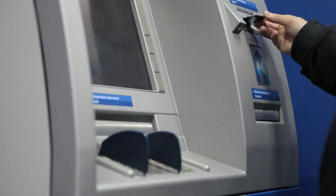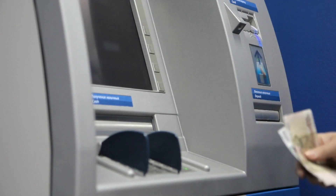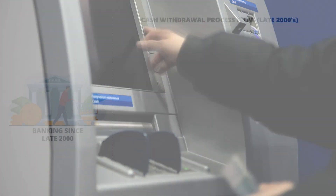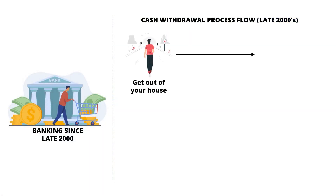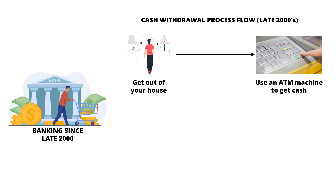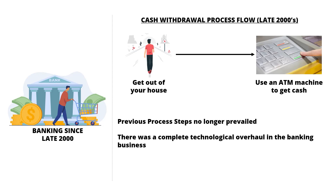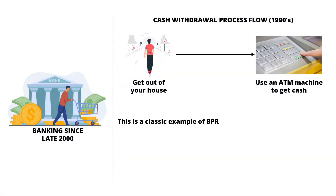Then some consultants came together and used BPR for this problem. They decided to use technology in the banking business, and you observed the emergence of ATM machines. The launch of ATM machines radically redesigned the cash withdrawal process — now an individual just needed to go to the closest ATM machine, swipe a card, and get the money. The previous process steps no longer prevailed; there was a complete technological overhaul in banking. This helped change the earlier consumer culture, as customers began to keep most of their money in banks and less cash at home. This is a classic example of BPR.